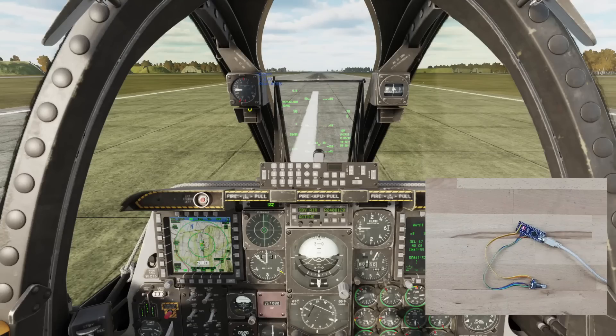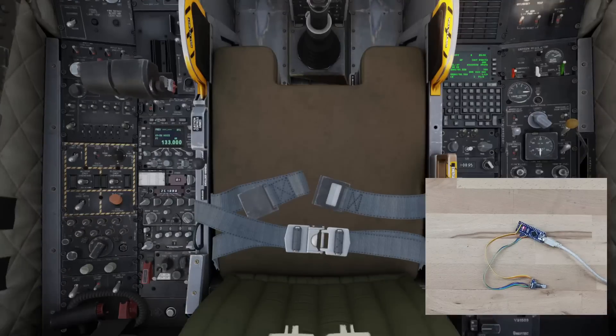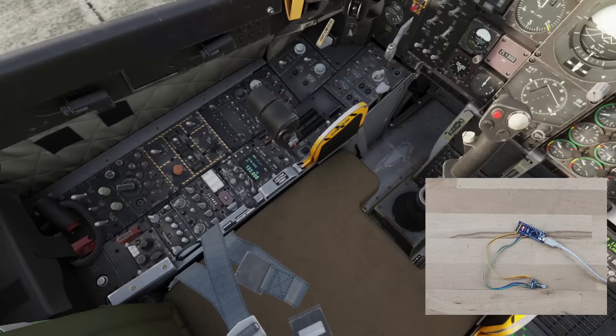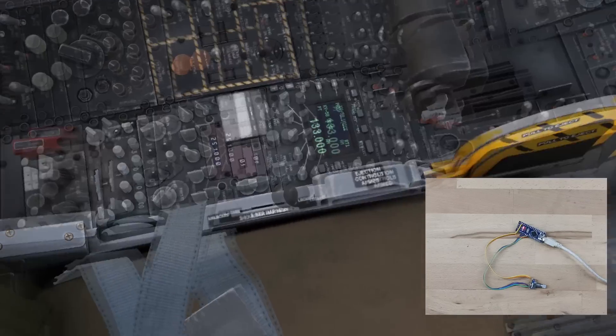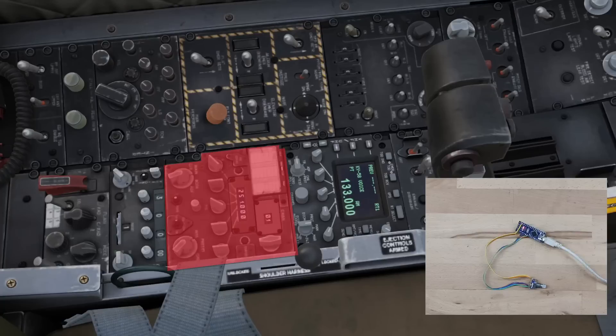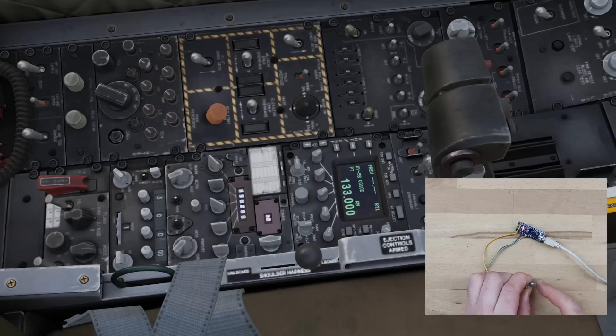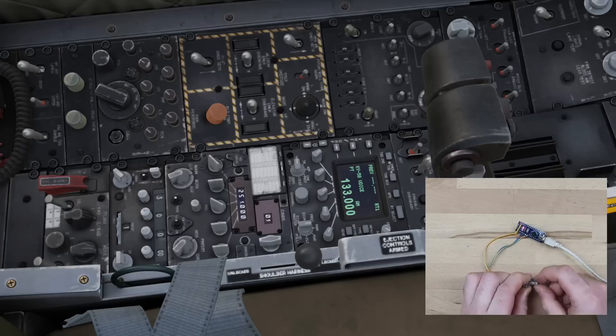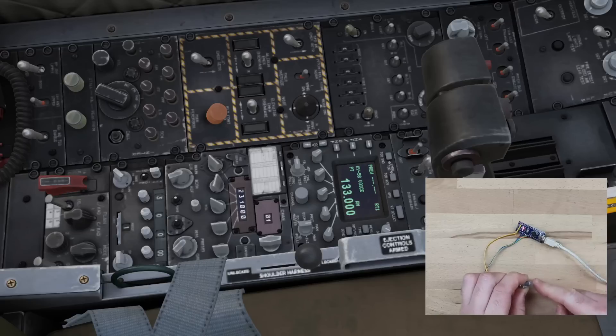Alright, here we are in the instant action mission again. Let's scroll down and have a look at our UHF radio over here. Alright, you'll see now that when I push this button the test display works and when I use the rotary encoder it changes that knob. Simple as that.